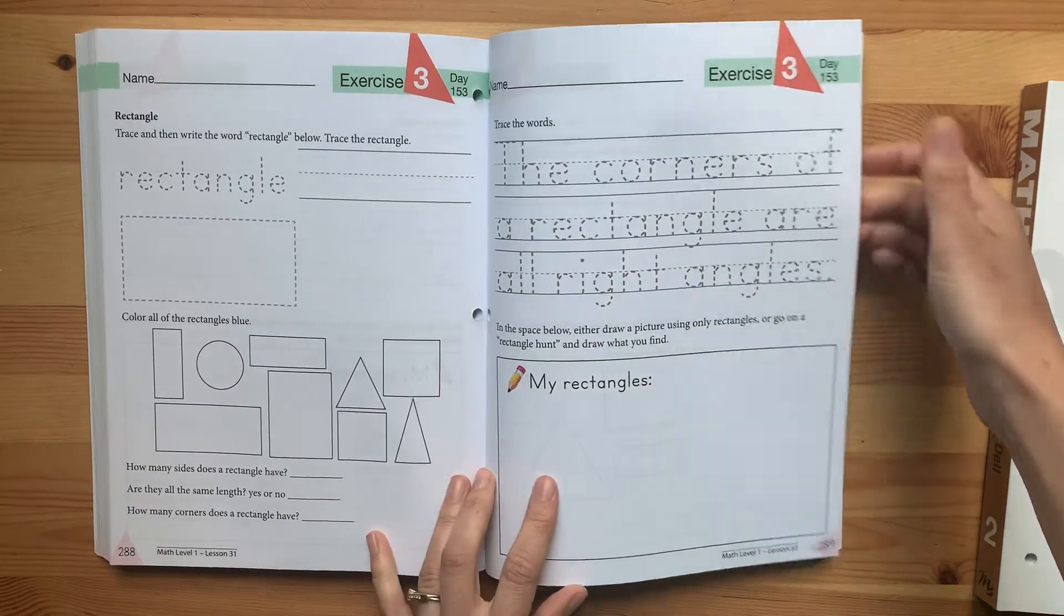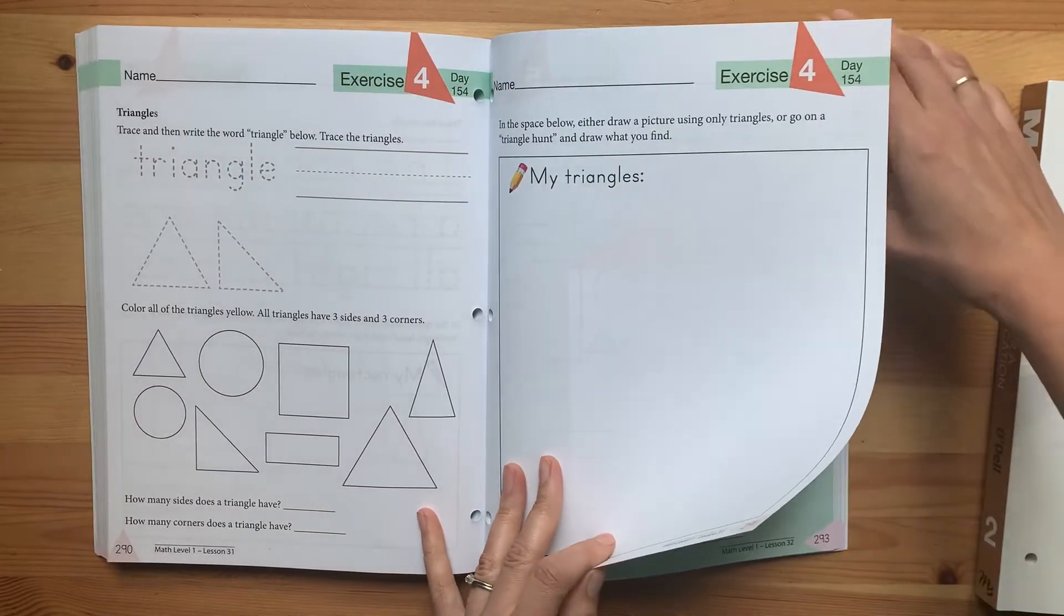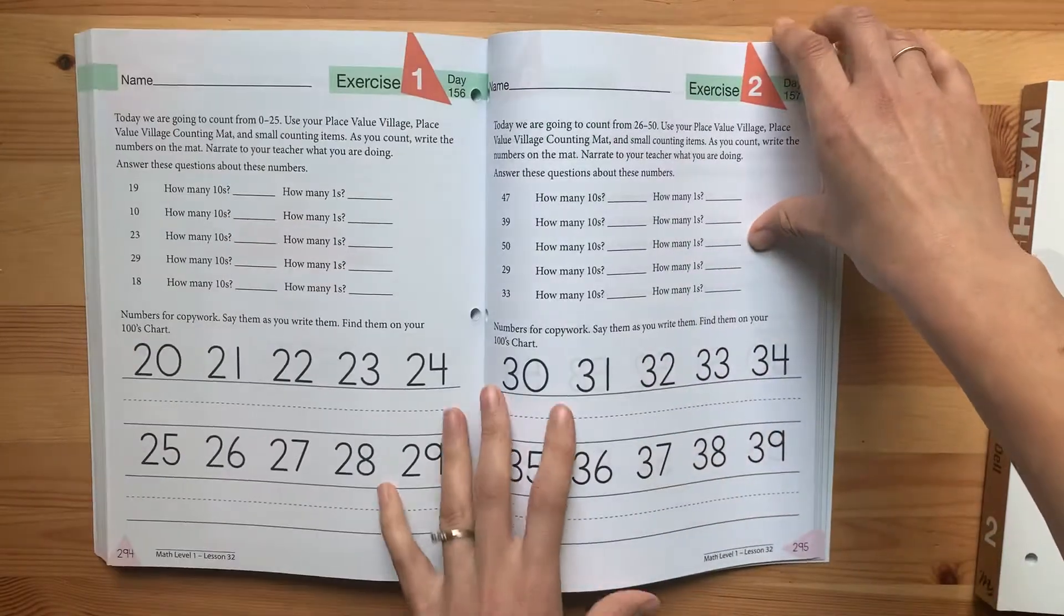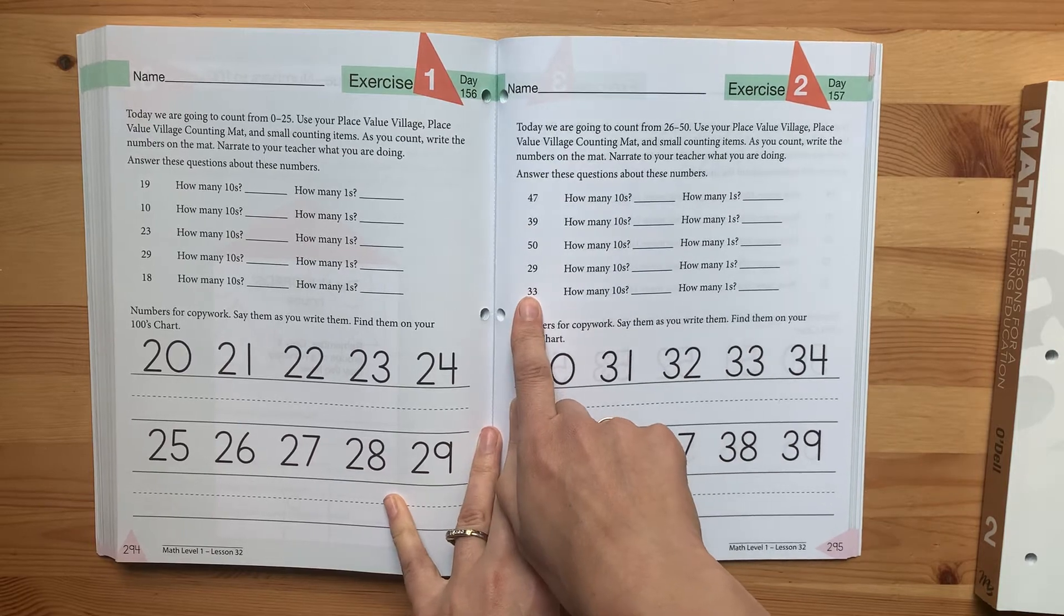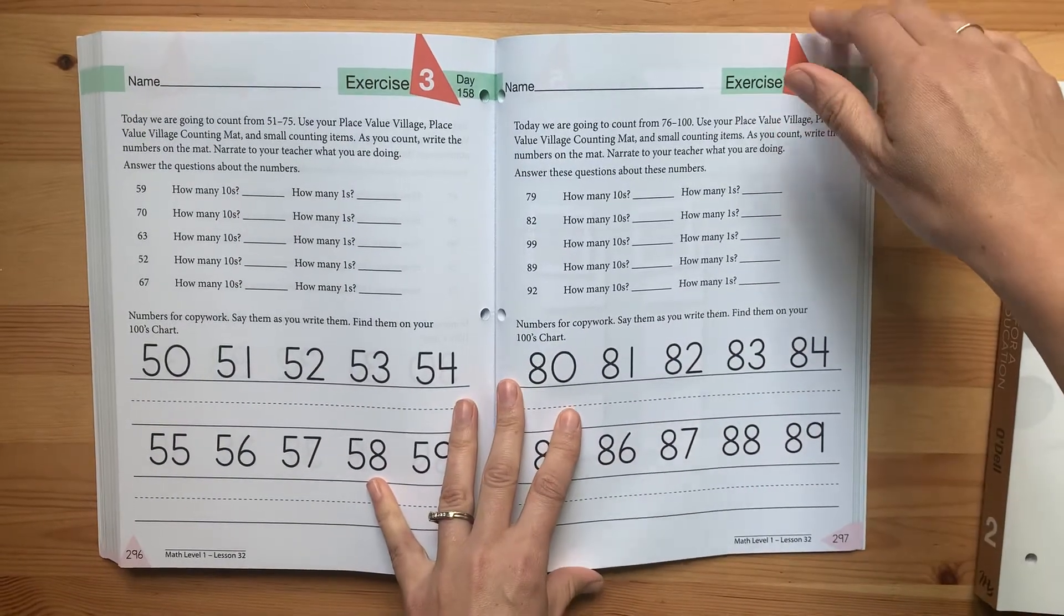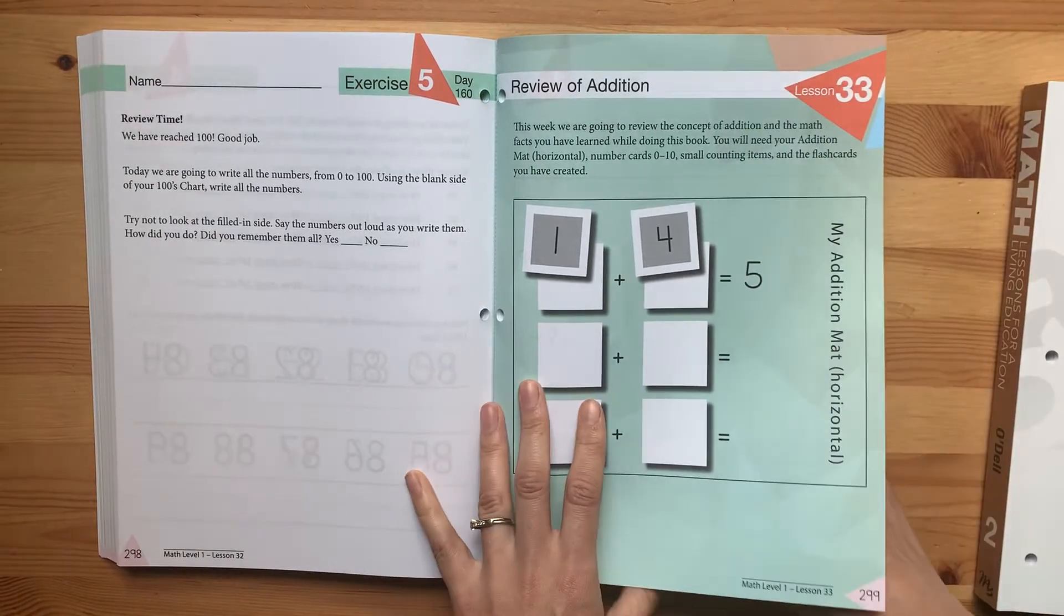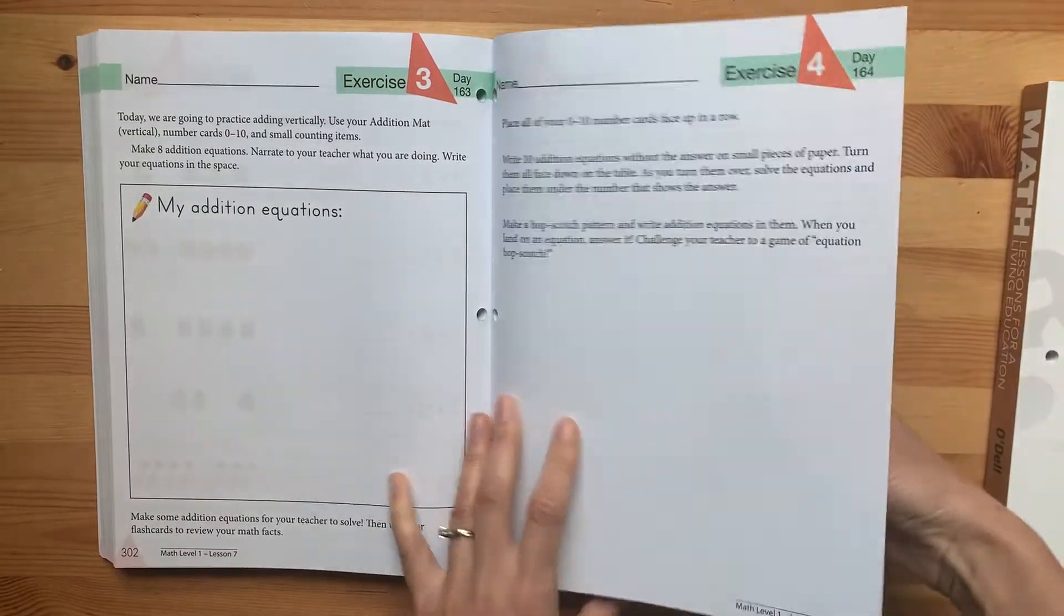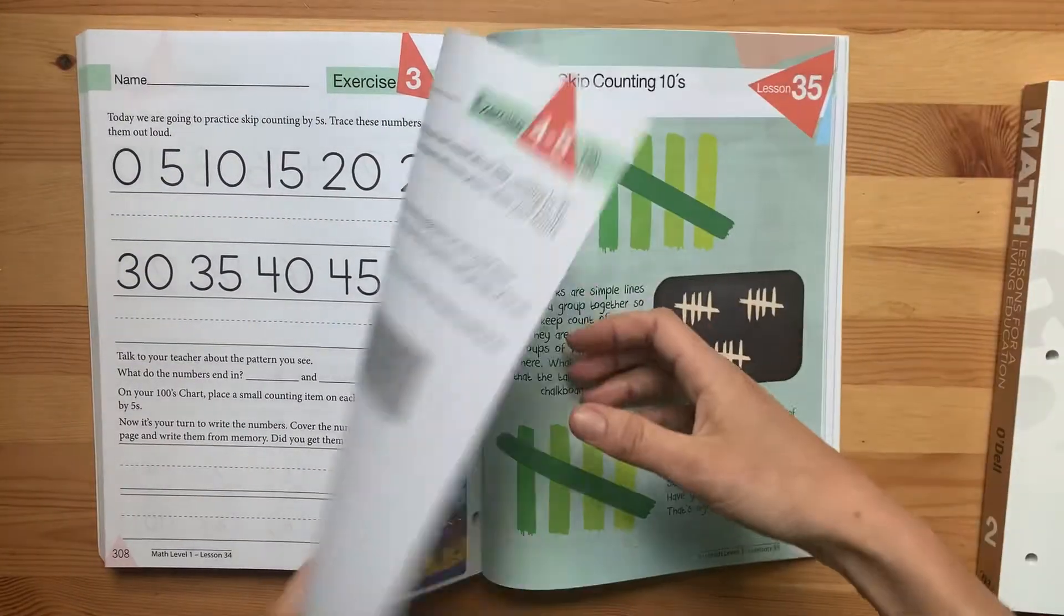Tracing. More shapes practice. Learning about what makes a triangle. This is more practice. This is good for reinforcing the ones column and the tens column. That's actually something we may need a little bit more review on with my son because I don't feel like we covered that a ton last year.